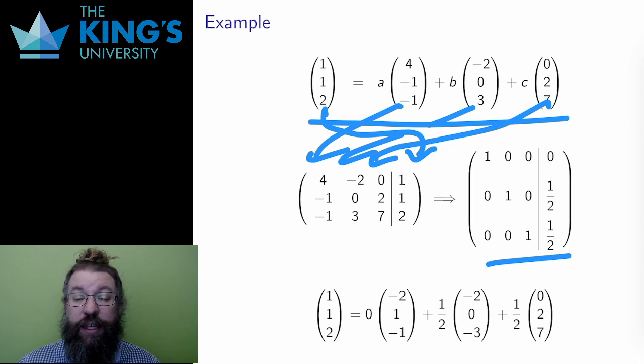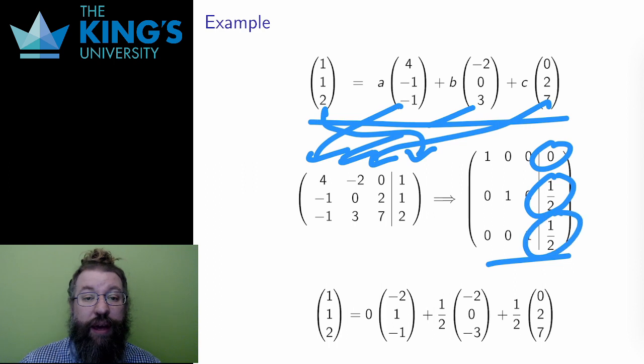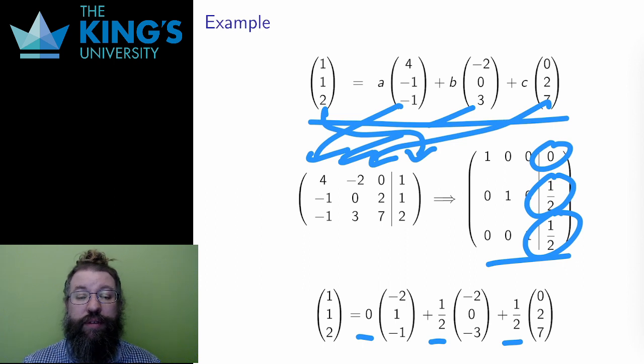The first row says that A equals 0, the second row that B equals 1/2, and the third that C equals 1/2. Therefore, I have my expression, and I can write (1, 1, 2) in terms of this basis of R3.